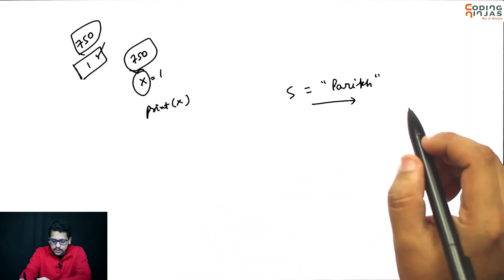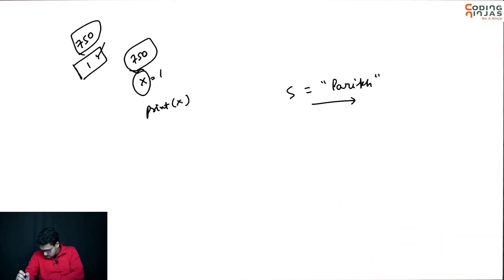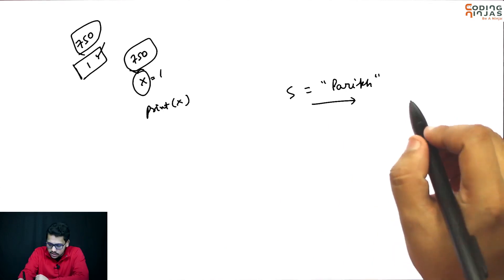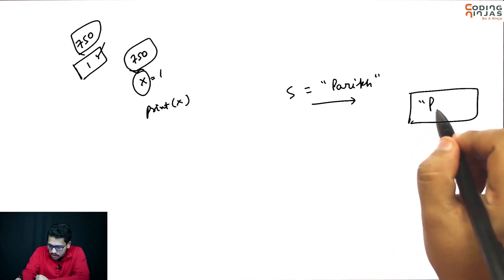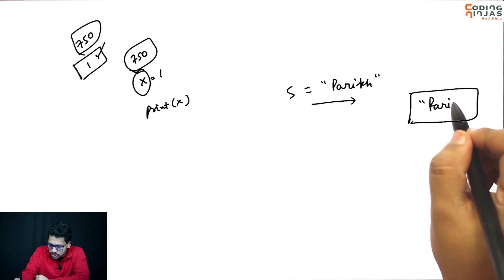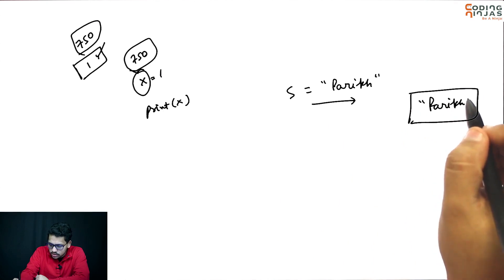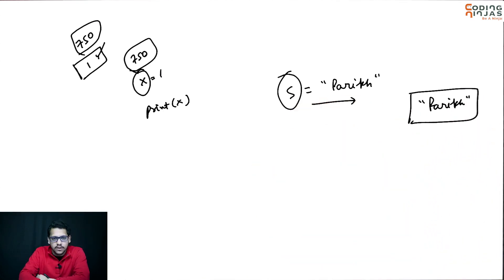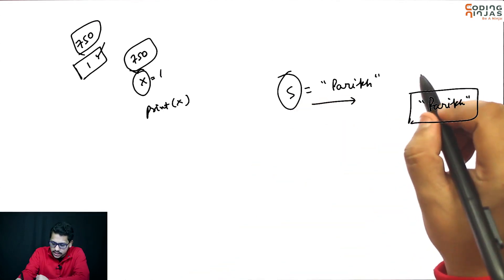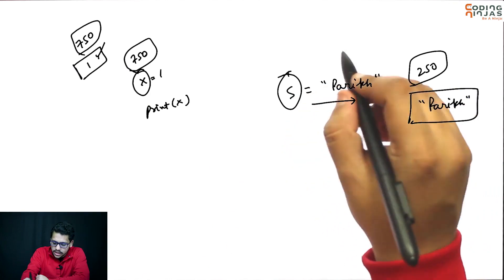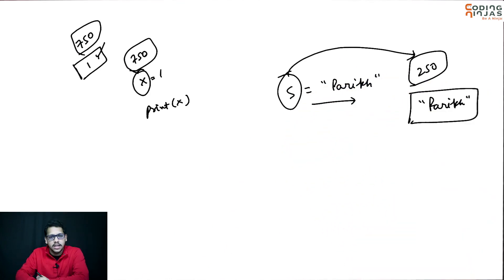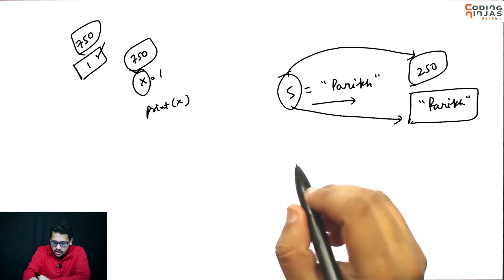So when you do this, somewhere 'park' is stored and s has the reference of it — let's say it is stored at reference 250. So s has a reference of it, s refers to it.